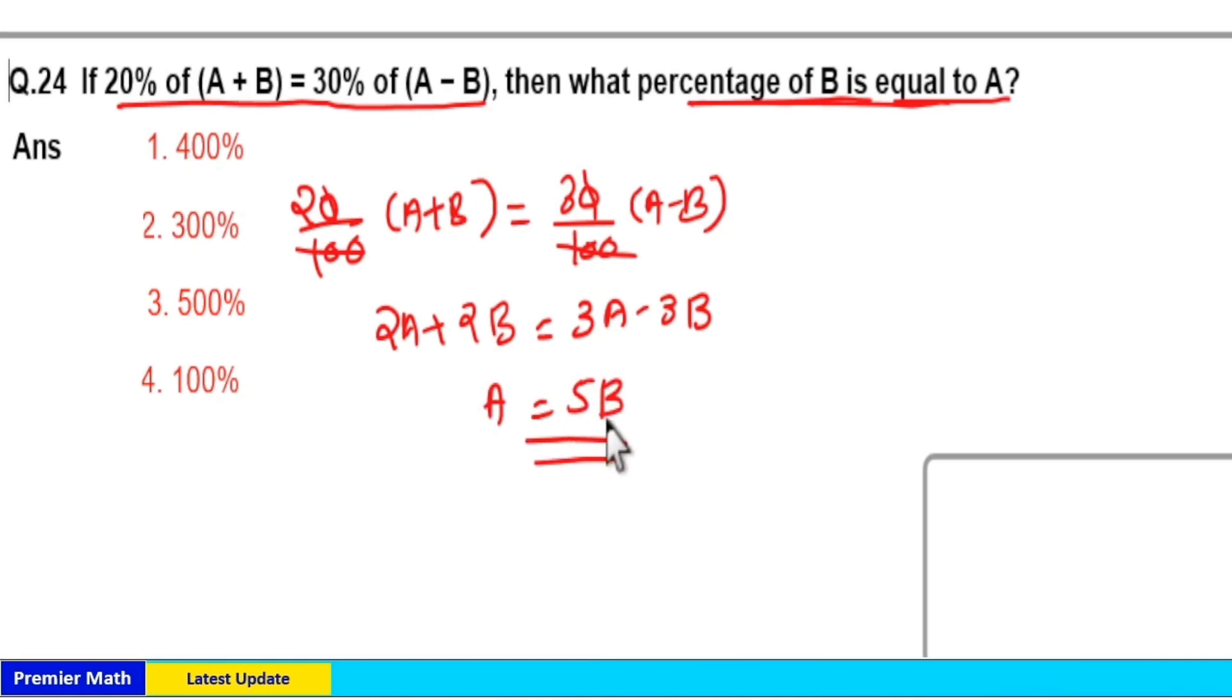So a is equal to 5 times b means a is 500% of b. A is 500% of b. Option 3 is your answer.